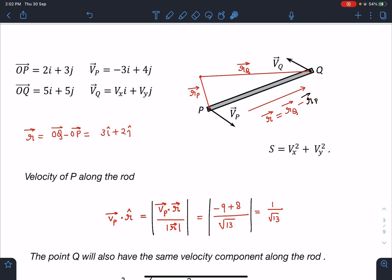That means now this part is fixed for all the points. At least 1 by root 13 meter per second velocity component in this direction every point on the rod will carry.